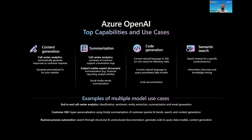There are four groups of capabilities that are evolving as use cases that our customers are utilizing this technology for in their businesses. Starting from the far left here, which is content generation. While content generation sounds very generic, that's what ChatGPT models do — but how is that useful in a business?